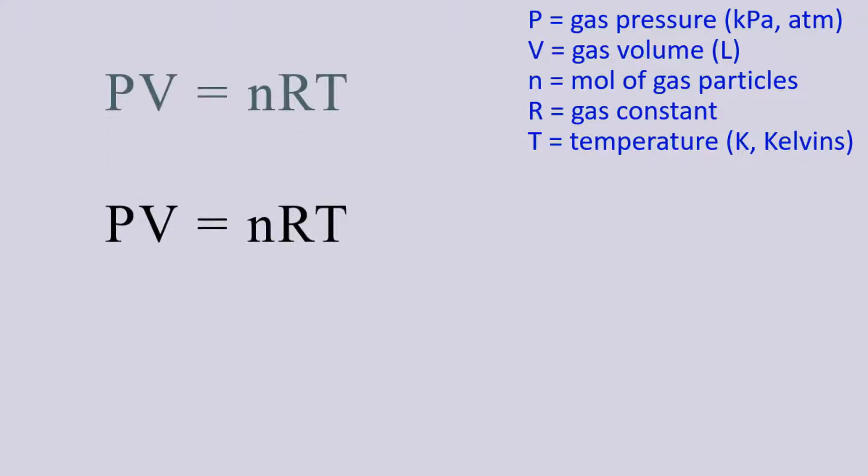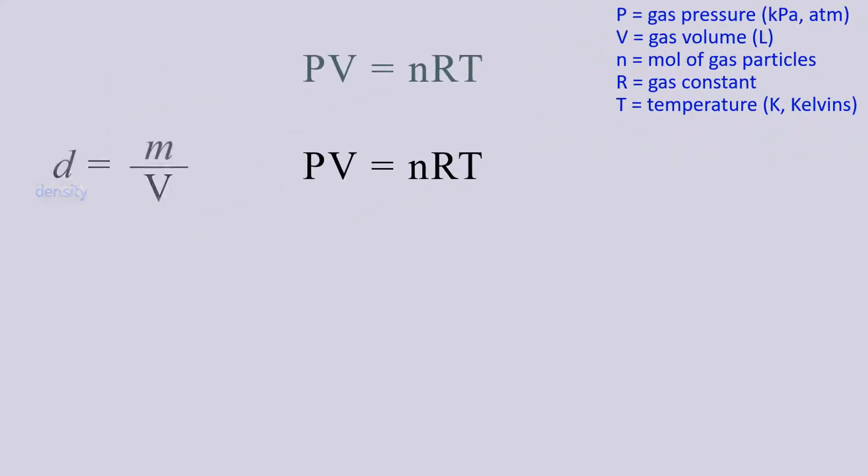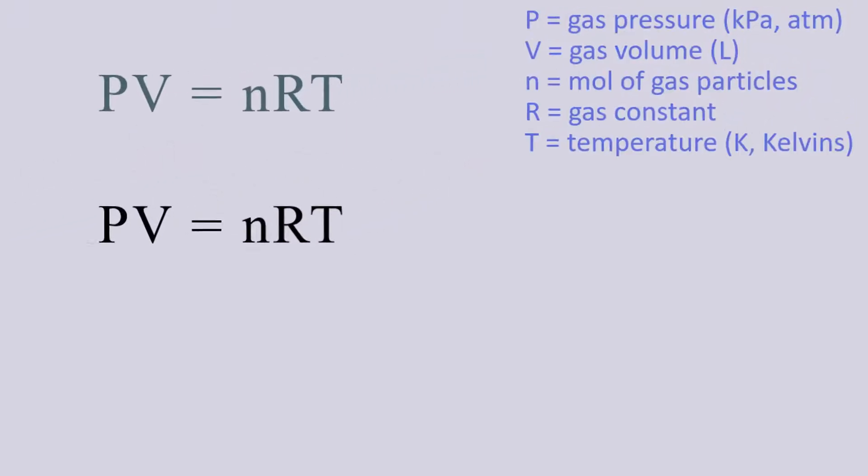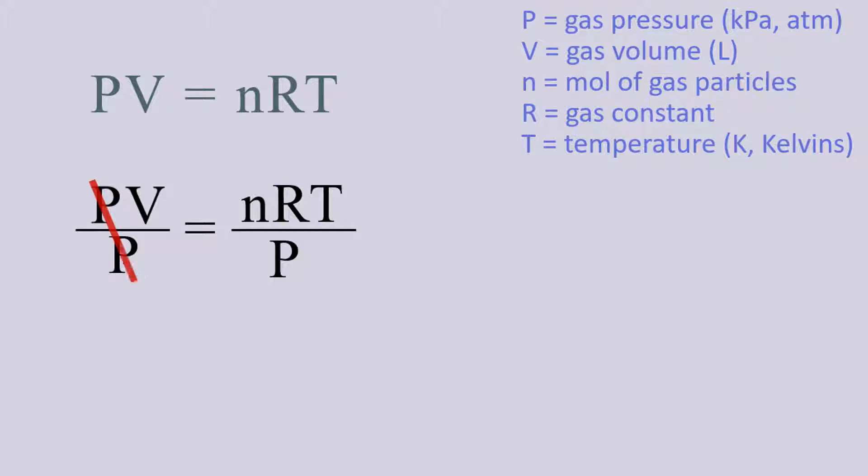Let's take PV equals nRT and isolate volume since that is the denominator in density, which is mass over volume. Dividing both sides by pressure allows us to cancel pressure on the left, and we then have the equation rearranged in terms of volume, V.